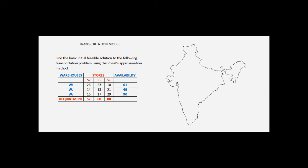Material from the warehouses needs to be shipped to the stores such that the demand and supply constraints are not violated. We have also been given the cost of shipment for one unit from the warehouses to the stores. For example, shipping one unit from W1 to S1 costs 26 rupees, while shipping one unit from W1 to S2 costs 23 rupees. We need to find the basic initial feasible solution satisfying all supply and demand constraints.